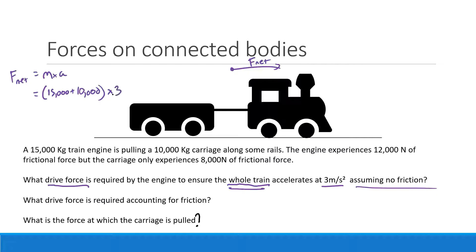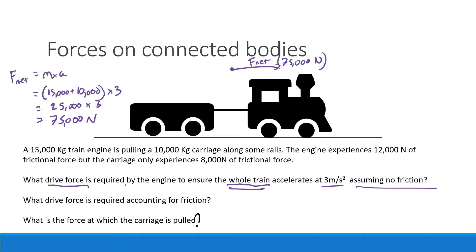That's the mass of the whole train, because ultimately that's how much we need to accelerate. That becomes 25,000 times 3, which equals 75,000 newtons. Therefore, our forward force has to be 75,000 newtons — that's how much force we need to apply to make this train move forwards at 3 metres per second squared.